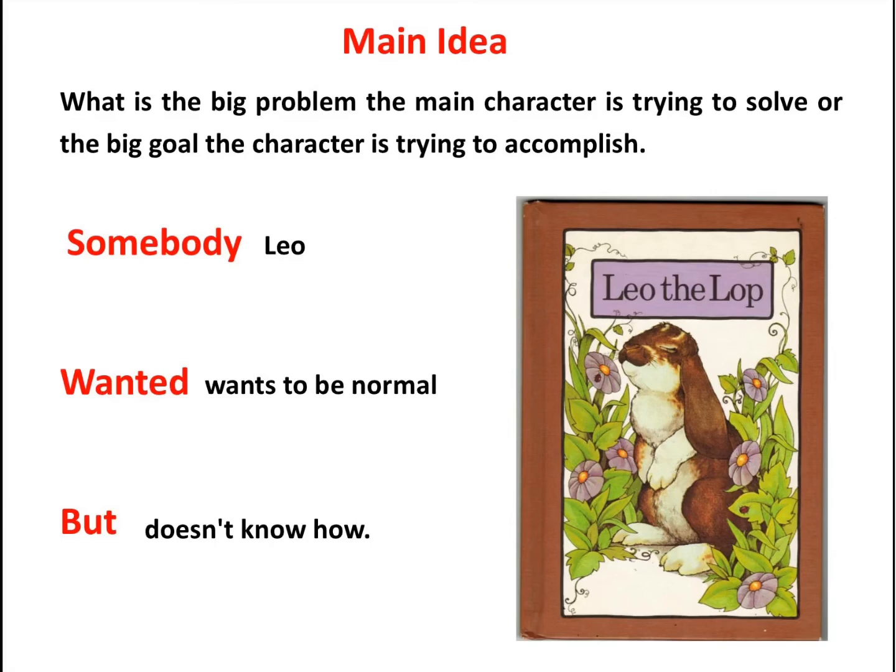And if you think back to the story Leo the Lop, that's what the whole story was about — Leo wanted to be normal, but he didn't know how. So what I want you to do now is go get your chapter book and begin to read it. Stop after each chapter and think: what was the main idea? Who was the somebody in that chapter? What is it that they wanted? But what was their problem getting it? Write that down. As you do that with each chapter, you're going to start to get the hang of finding the main idea.